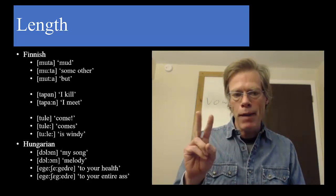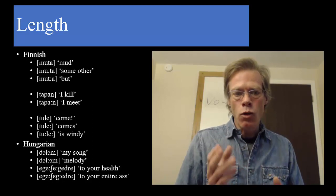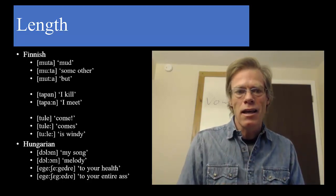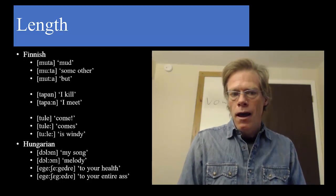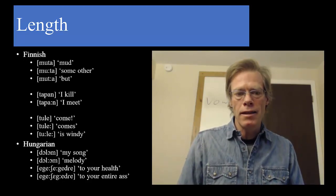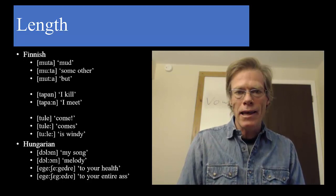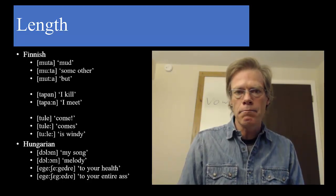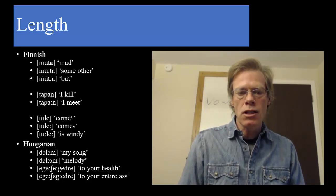Another pair in Finnish is 'I kill' versus 'I meet' — clearly an important distinction. The only difference in pronunciation is that the vowel of the second syllable is pronounced long: 'tapan' versus 'tapaan.' Then there's a triplet of 'come,' 'comes,' and 'is windy': 'tule' versus 'tulee' versus 'tuulee.' In Hungarian, a related language, we also find length differences, such as 'my song' versus 'melody': 'dalom' versus 'dallom.'